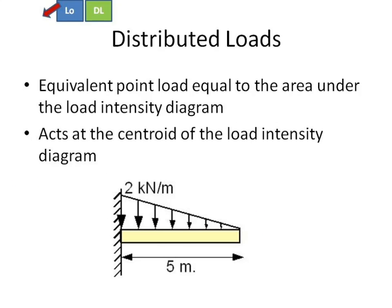Distributed loads have two major principles. The first one is that the magnitude of the equivalent point load is equal to the area under the load intensity diagram. If I have this triangle right here as my load intensity diagram, the area under that is one half times 2 times 5, or 5 kilonewtons.